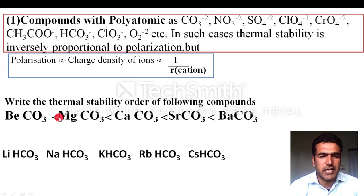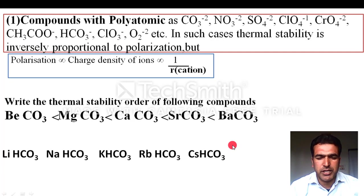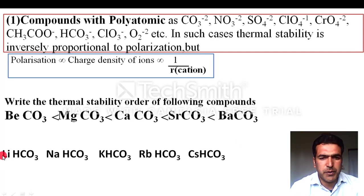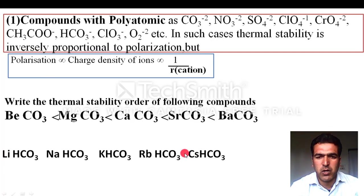Another question: lithium bicarbonate, sodium bicarbonate, potassium bicarbonate, rubidium bicarbonate, and cesium bicarbonate — write the thermal stability order. The bicarbonate anion is polyatomic, so thermal stability depends on polarization. As you move from lithium to cesium, the cation size increases, so polarization decreases and thermal stability increases. The order is: CsHCO3 > RbHCO3 > KHCO3 > NaHCO3 > LiHCO3.